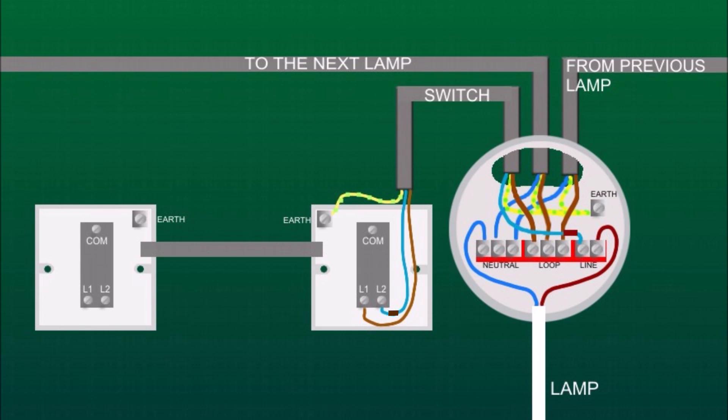At the first switch, earth wire goes to the earth terminal, brown to L1, gray to L2, and black to COM terminal.